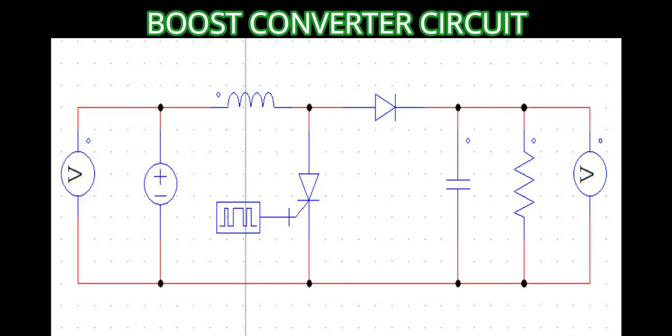Here we can see the circuit of a boost converter. I am using a GTO as a switch instead of an SCR, and the reason why I am using GTO instead of SCR has been mentioned in the previous video, so make sure to watch it if you haven't already.